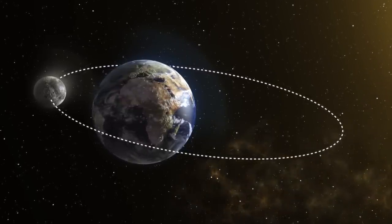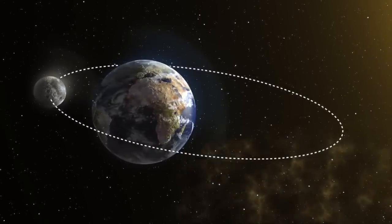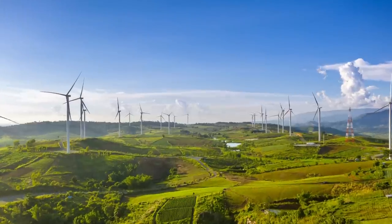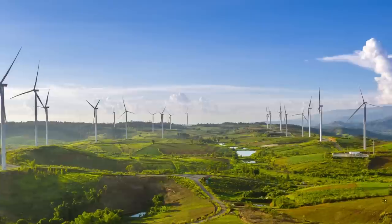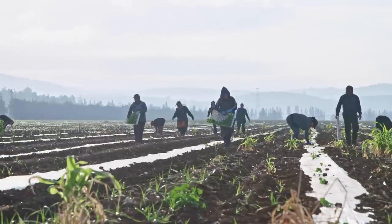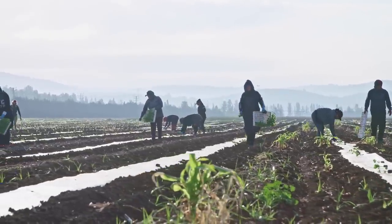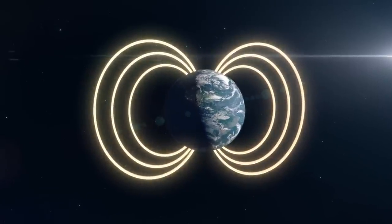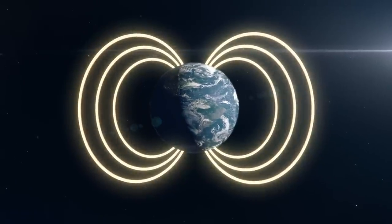This slowing down of the Earth's rotation has a number of consequences, both positive and negative. On the positive side, it means that the length of a day is gradually getting longer, which can have a positive impact on agriculture and other activities that rely on daylight hours. In addition, the slowing down of the Earth's rotation has a small effect on the Earth's magnetic field, which helps to protect us from harmful solar radiation.